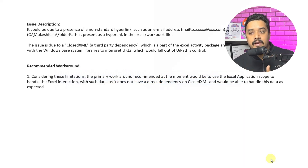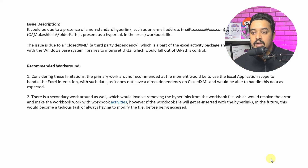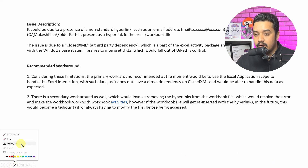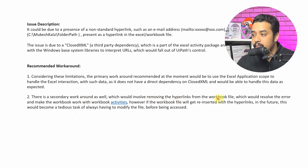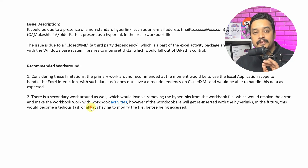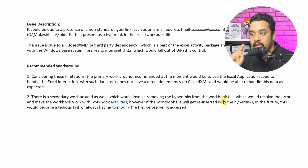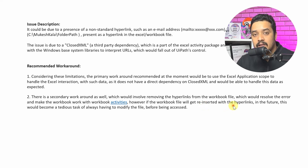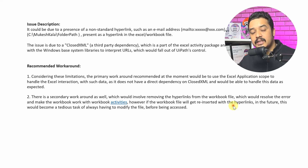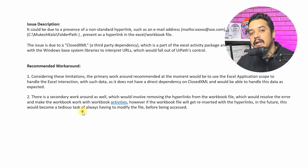So we've confirmed the Excel Application Scope works. The other — secondary — workaround involves removing the hyperlinks from the workbook file, which could resolve the error and make the workbook work with Workbook activities. In simple words: just go to the config file and remove the hyperlinks. However, this has a risk: if it's a large config that many people have access to, hyperlinks could be re-inserted in the future, making this approach tedious.